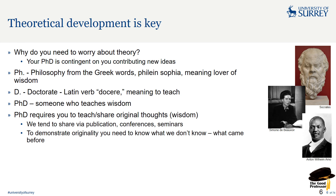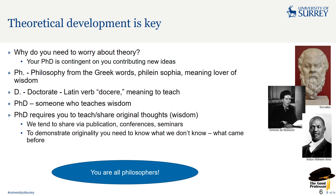Theoretical development is key. Why do you need to worry about theory? Because your PhD and getting your PhD is contingent on you contributing some new ideas. The PhD is philosophy, from the Greek word philosophia, meaning love of wisdom. The doctorate comes from the Latin verb docare, meaning to teach. So PhD is somebody who teaches wisdom. The PhD requires you to teach and share original thoughts — you are going to be wise at the end of this. We tend to share via publication, conferences, and seminars. To demonstrate originality, you need to know what we don't know, what came before — and that's why the literature review is so important. You're effectively a philosopher, creating original thought.